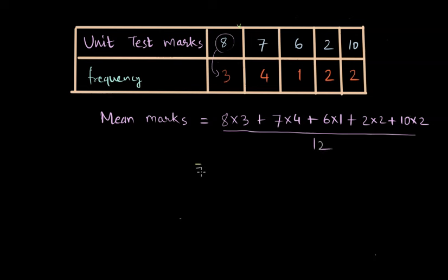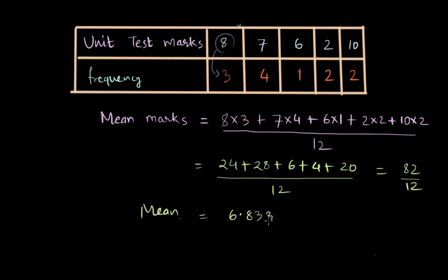Therefore, the mean marks is equal to 24 plus 28, 6 plus 4 plus 20, divided by 12. And this is nothing but 82 divided by 12. The mean comes out to be 6.833.